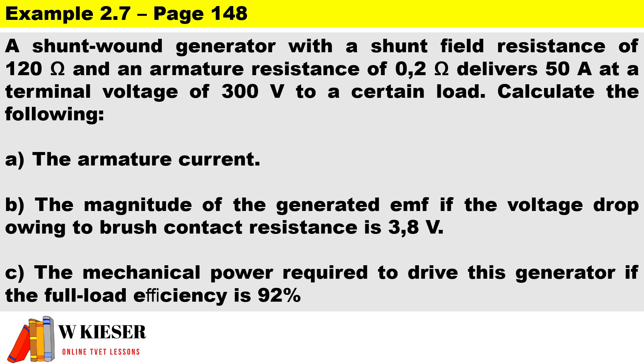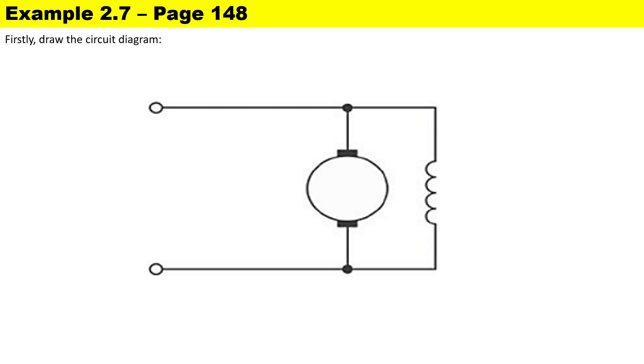This calculation is taken from example 2.7 from our textbook. It reads as follows: a shunt wound generator with a shunt field resistance of 120 ohms and an armature resistance of 0.2 ohms delivers 50 amperes at a terminal voltage of 300 volts.